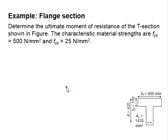It is given that the steel strength is 500 N per mm squared, and the concrete strength is 25 N per mm squared.